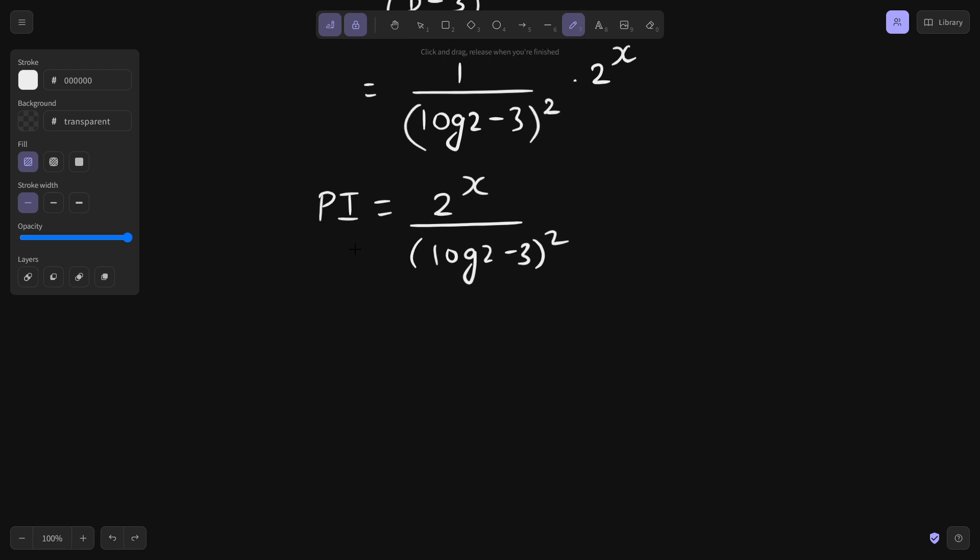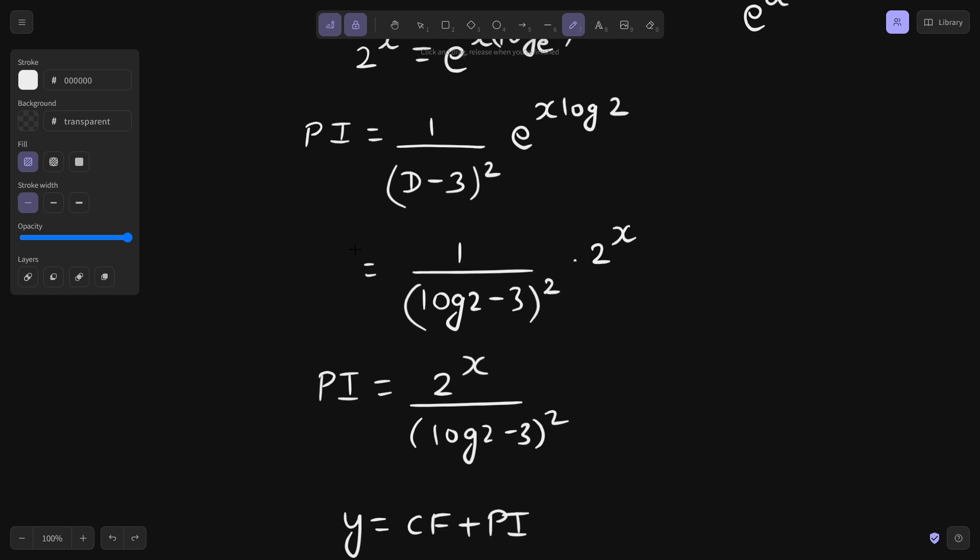Now, final is your y equals to CF plus PI. So y equals to c1 plus c2x times e power 3x plus your PI is 2 power x divided by log 2 minus 3 whole square. I can write like this because this log 2 minus 3 whole square is nothing but a constant.